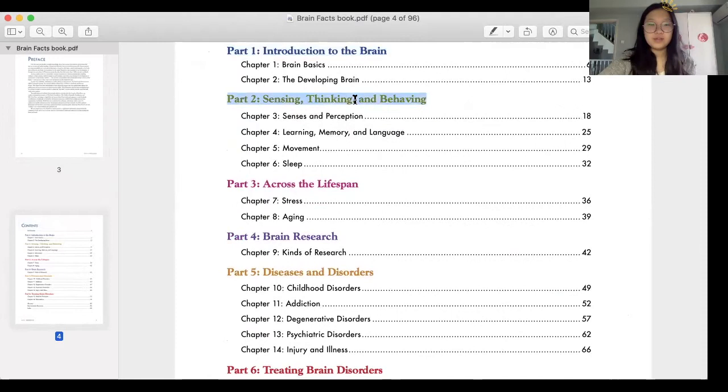Second is Sensing, Thinking, and Behavior. This part is not that important but you should definitely know the knowledge too because this part is really important for second round or international Brain Bee. This part you can just read over twice but my suggestion is to take some notes too.